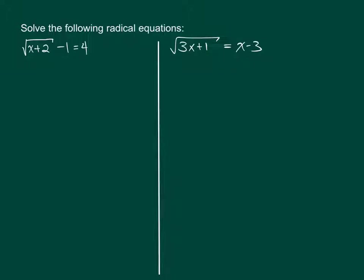Solve the following radical equations. In this first example on the left, we have the square root of X plus 2, minus 1, equals 4. The first thing you need to do when solving a radical equation is to isolate the radical. It turns out that we have something extra here — this minus 1 — we need to push that over to the other side before we can do the magic of squaring both sides.